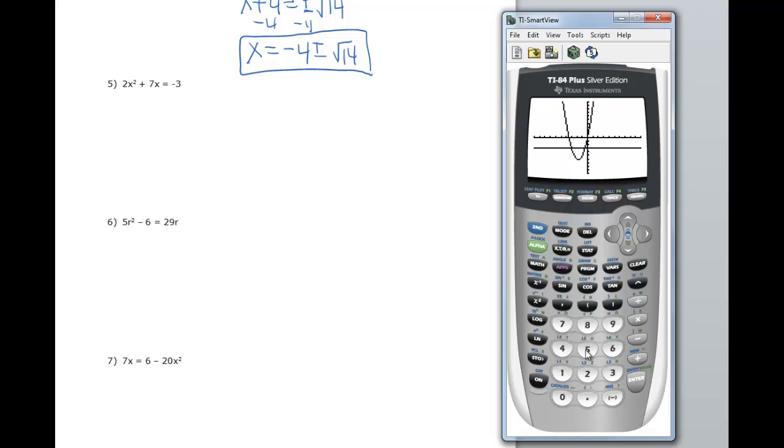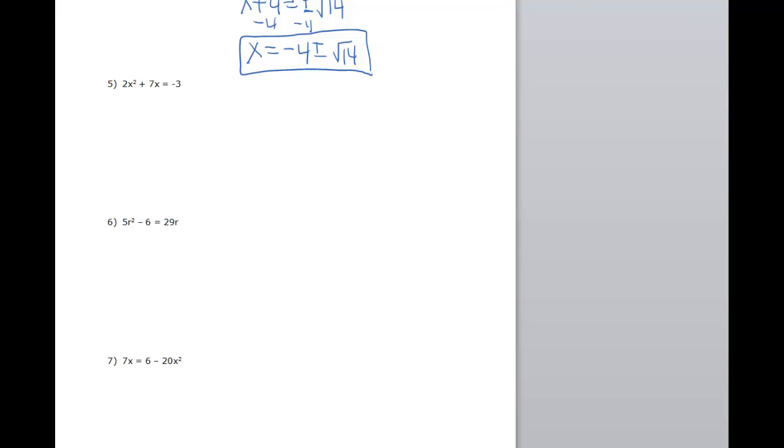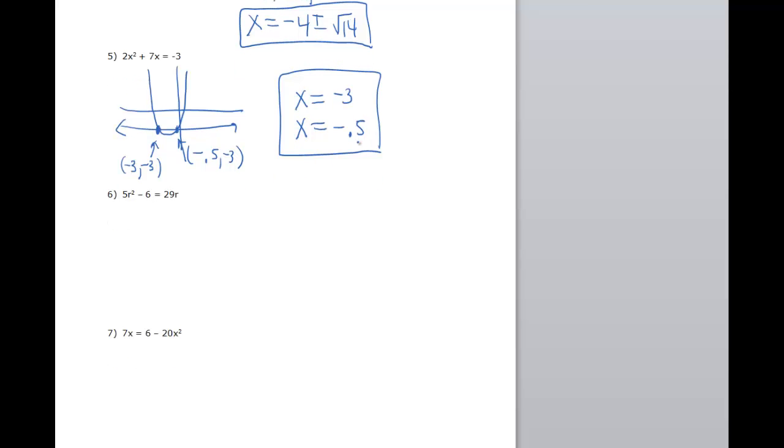We need to find the other one by going to the intersect. Second calc, option number 5. Negative 3 must be that one, so we need to find the one over here to the right. I'm going to toggle to the left though since they're both on the negative side. That's pretty close. Hit enter, hit enter, hit enter. We get an answer of negative 0.5. Let me draw my graph. Here's my lovely parabola. My intersections are here and here. Those were at negative 3, negative 3 and negative 0.5, negative 3. So my x's for this one are negative 3 and negative 0.5.